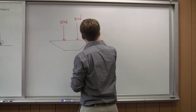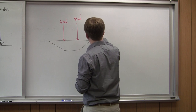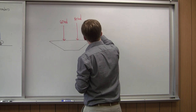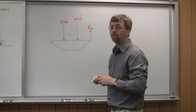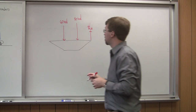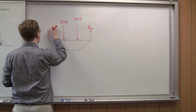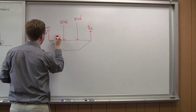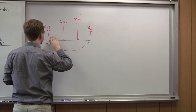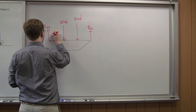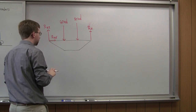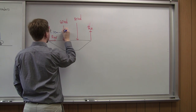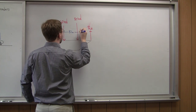On the roller side we have reaction force RF. On the pin joint side we have reaction forces in both the X and Y directions: RAY and RAX. The distances along the span are 10 meters, 10 meters, and 10 meters.